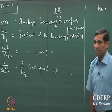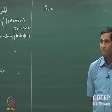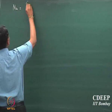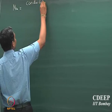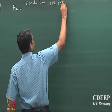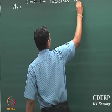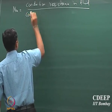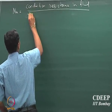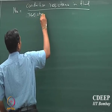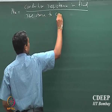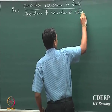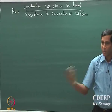We also define — Nusselt number is the ratio of conduction resistance in the fluid divided by resistance to convection across the interface, because you are really looking at transport across the interface.